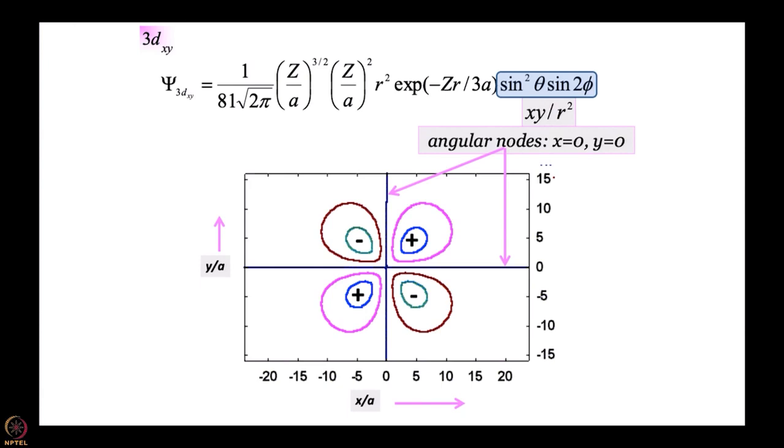We come to 3d xy: sin²θ sin 2φ. Using the relationship between sin 2φ and sin φ cos φ, sin 2φ is essentially 2 sin φ cos φ. Sin²θ multiplied by sin φ cos φ becomes sin θ sin φ multiplied by sin θ cos φ, which gives xy/r². xy equal to 0 means x equal to 0 is a node and y equal to 0 is a node. Once again, wherever you cross the node, wave function has to change sign. This is 3d xy.